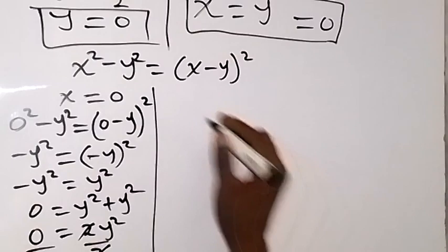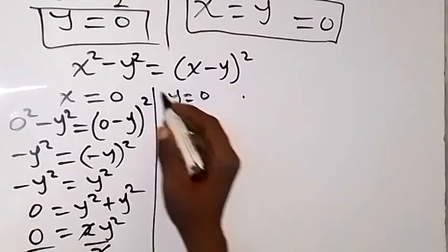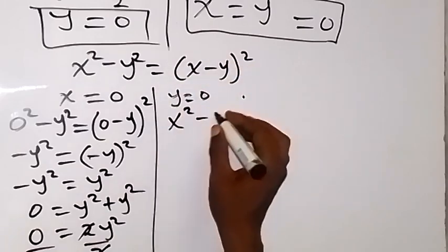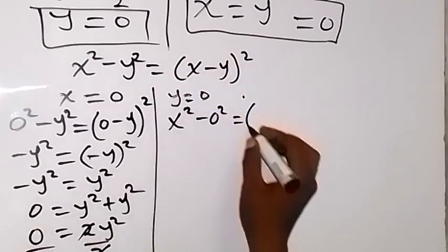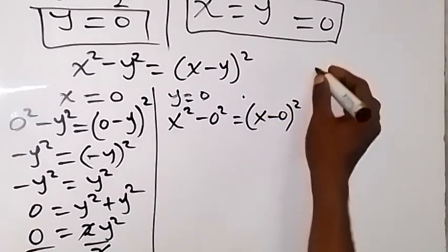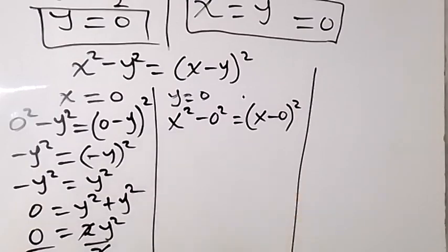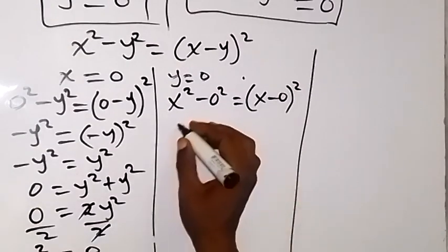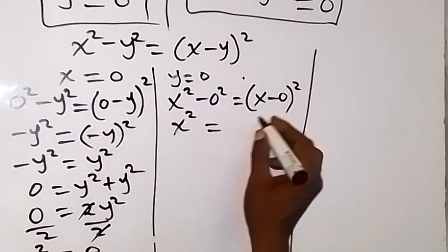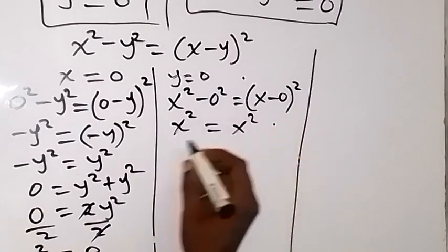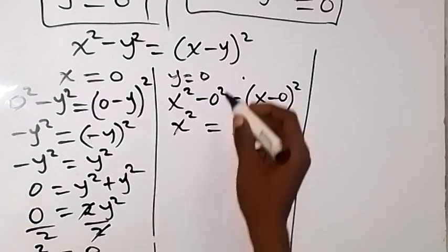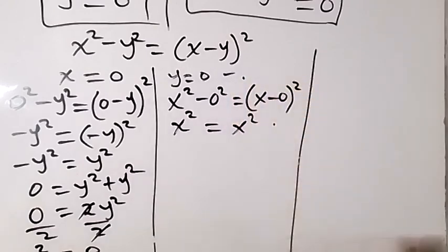Now let's also substitute y = 0 to check. Putting y = 0 into the equation gives x squared minus 0 equals (x minus 0) squared. This simplifies to x squared equals x squared, which is true — so y = 0 also works.